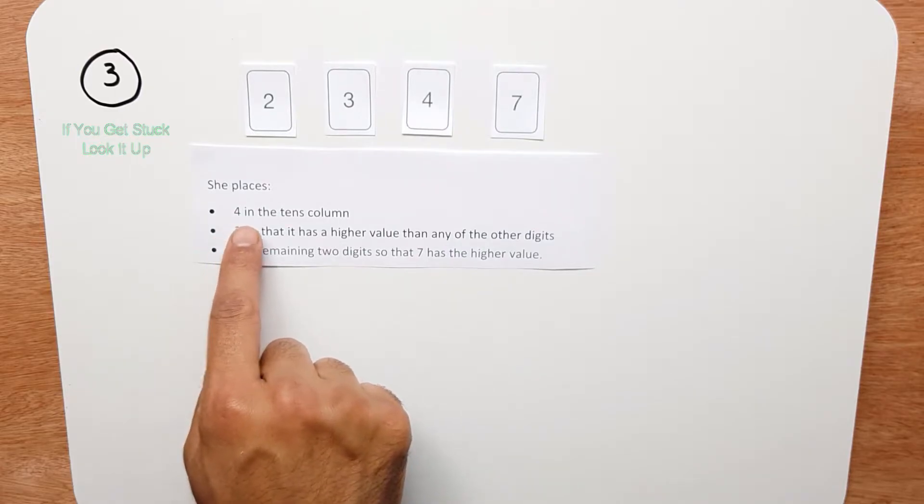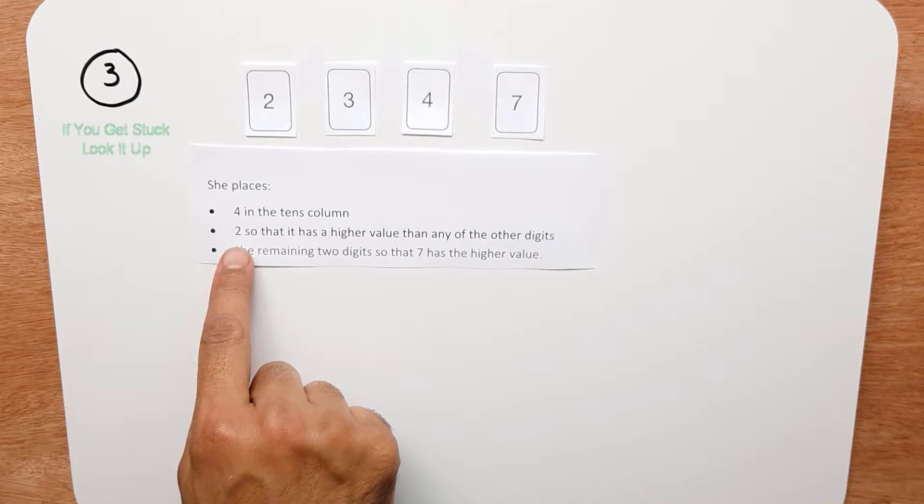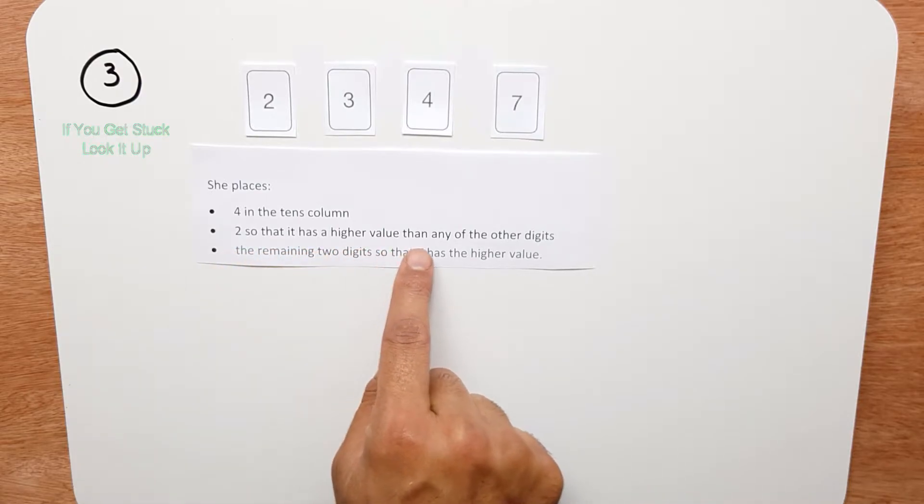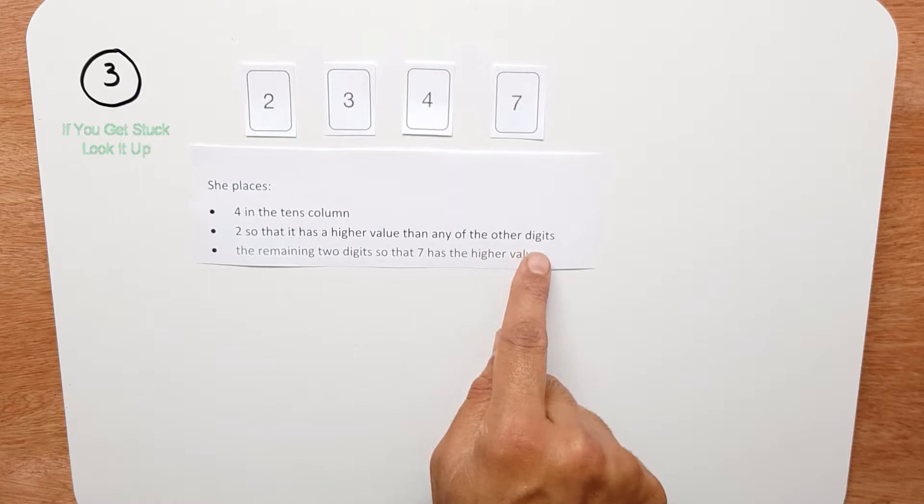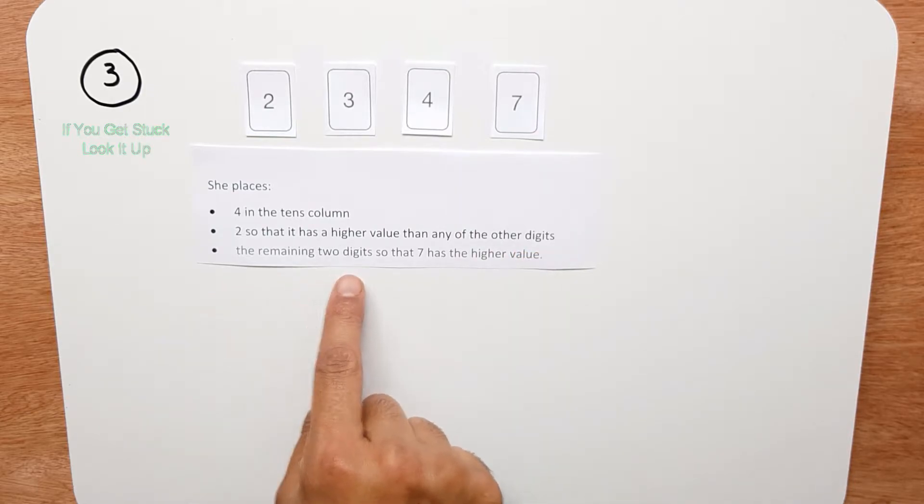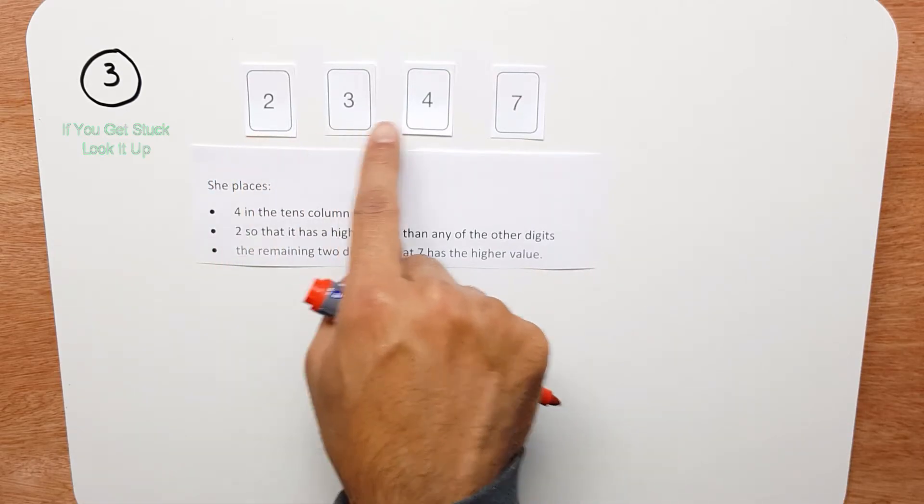She places 4 in the tens column, places the 2 so it has the highest value of any digit, and arranges the remaining two digits so that 7 has the higher value. There are three things we need to do. Our number will be a four-digit number.